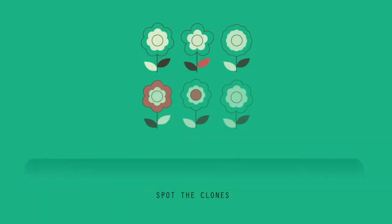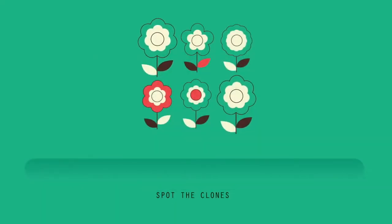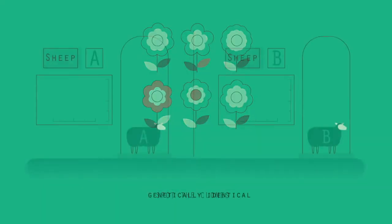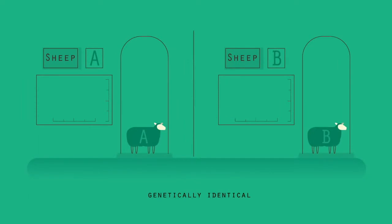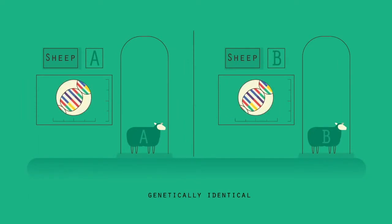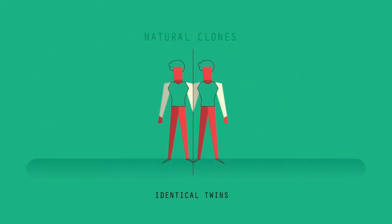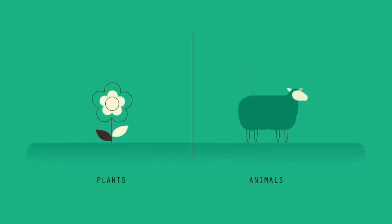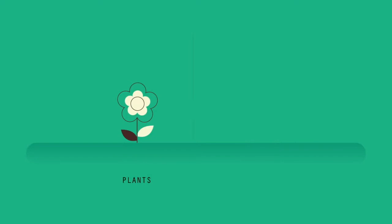Can you spot the two clones? When we talk about clones in science, we mean organisms that are identical copies. They have the same DNA as each other. Identical twins are examples of naturally occurring clones. Both plants and animals can be cloned.